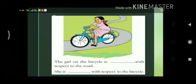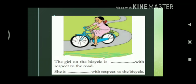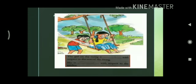Today's homework. You can see in the picture a girl is riding a bicycle. The girl on the bicycle is dash with respect to the road. She is dash with respect to the bicycle. Here you can see a girl on a swing. The girl on the swing is dash with respect to the seat of the swing. She is dash with respect to the garden.